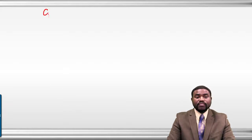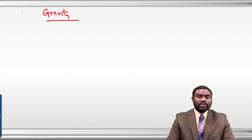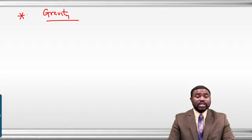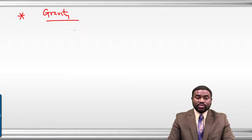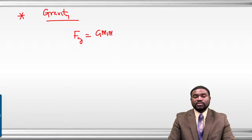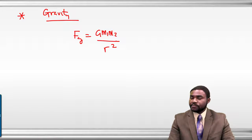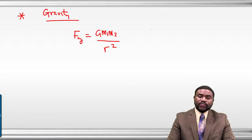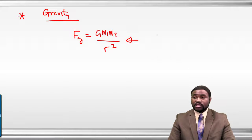Just as a recap of last week, we talked about gravity. We said gravity is an attractive force that exists between two objects that have mass. Quantitatively, the force of gravity between two masses is given by G·m₁·m₂ all divided by r squared. This is known as Newton's law of universal gravitation.